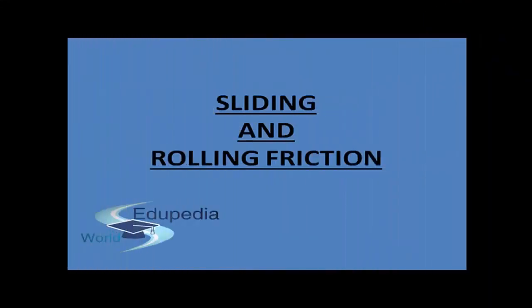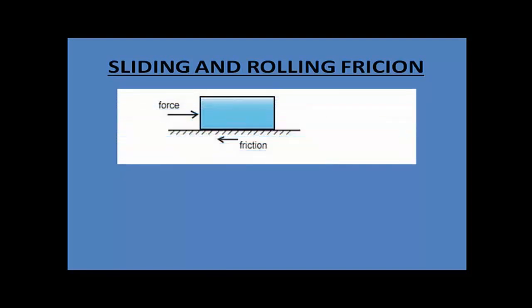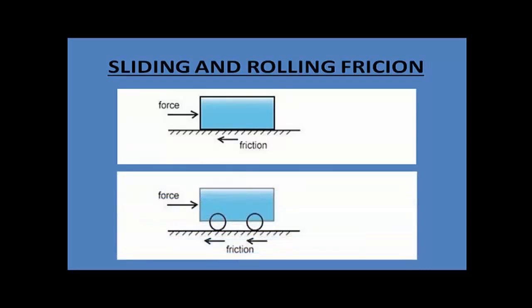Welcome to edupedia world.com. In this video we will learn about sliding and rolling friction — what is the difference between both kinds of friction and how they act upon any object. When you apply a small force onto an object, the object moves some distance, and there is always a force of friction that acts opposite to the motion. This force is called frictional force.